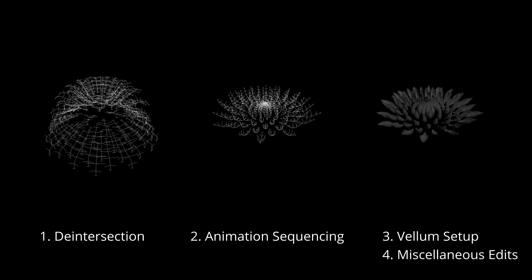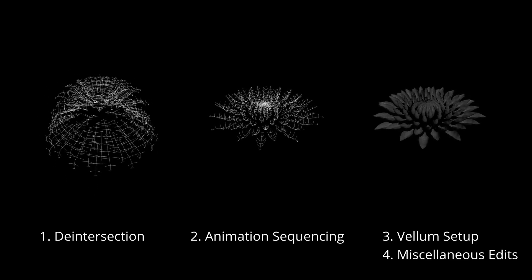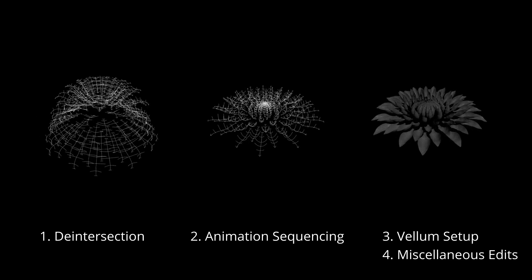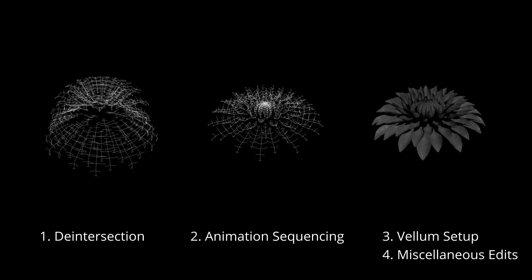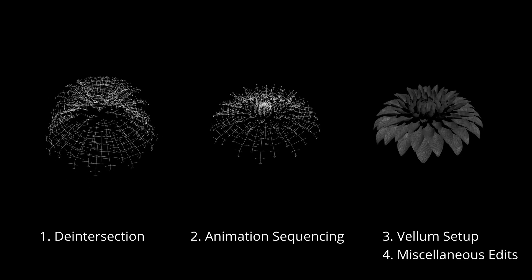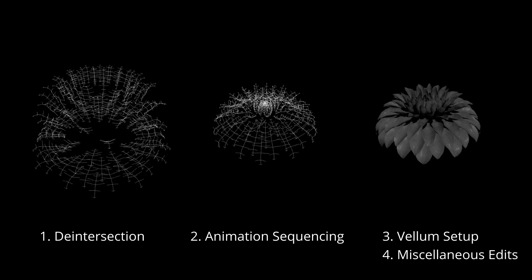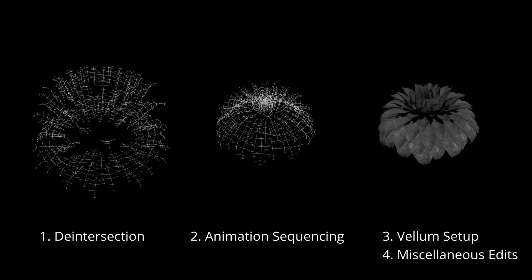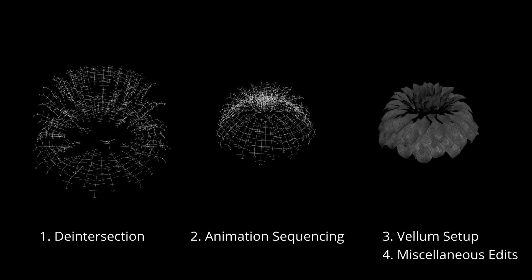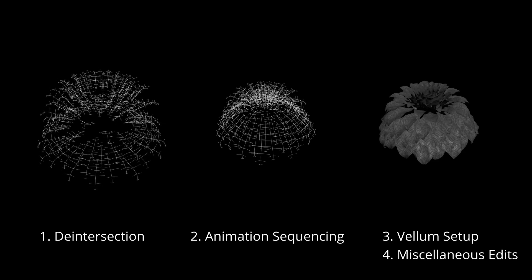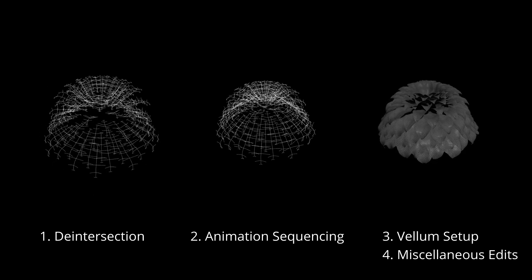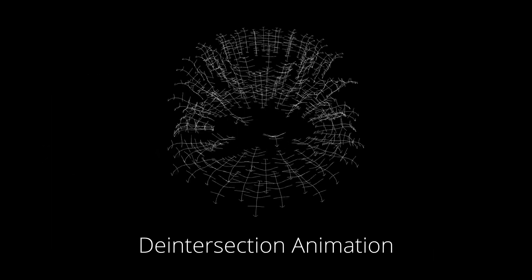First, we'll create a de-intersection animation for our petals. Second, we'll sequence three animations: the de-intersection, the closing, and the opening of the flower. Third, we'll run the animation through a vellum simulation. In the end, we'll do some small fixes and edits throughout the setup.